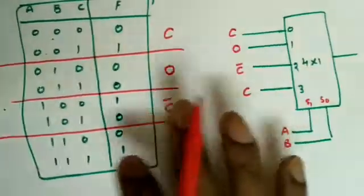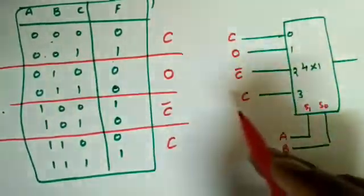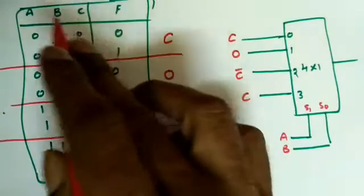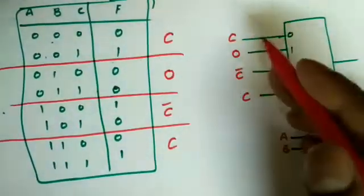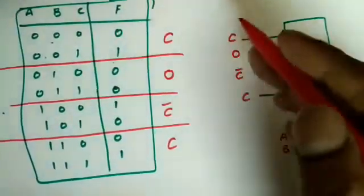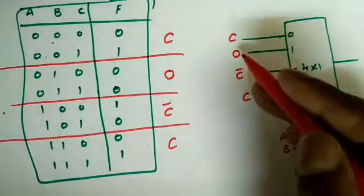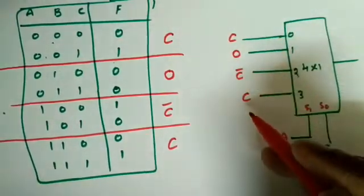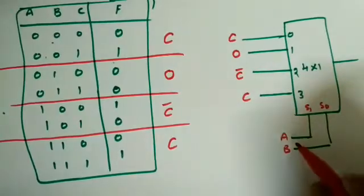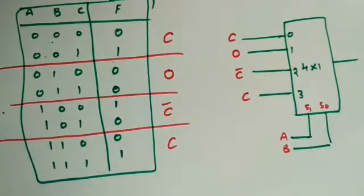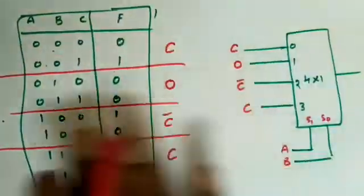So the design is complete: one input variable acts as the data line — it may appear as itself, its complement, 0, or 1 — while the other two variables are the select lines. If you know this concept, you can design any boolean function using a smaller MUX.